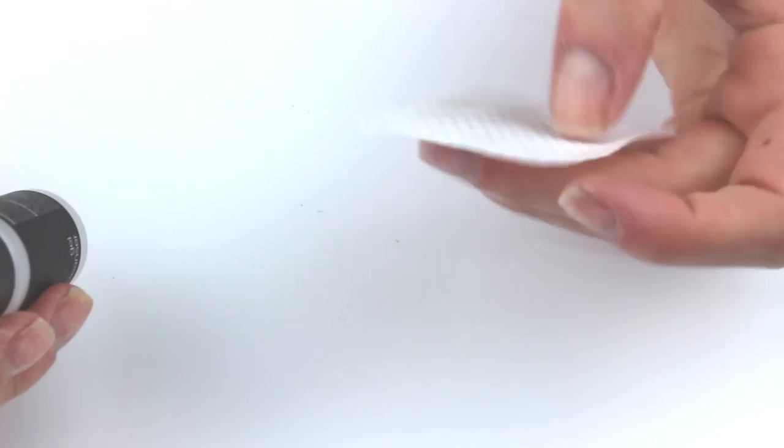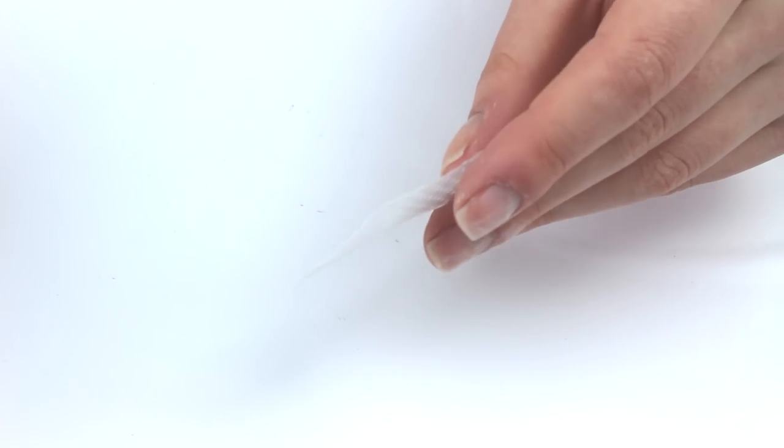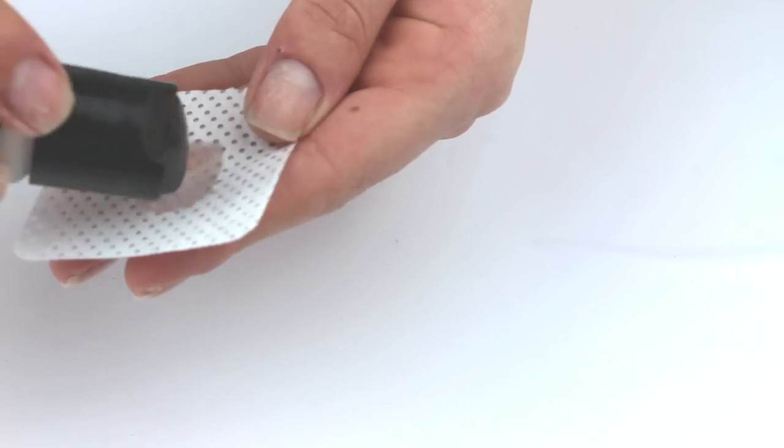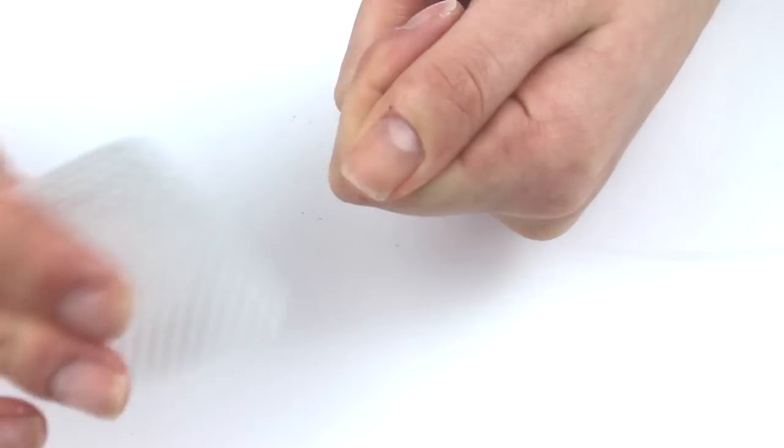Next taking a lint free wipe and the gel cleanser you want to rub over all your nails and let them air dry. Gently wipe that over every nail to remove the dust from buffing and filing.